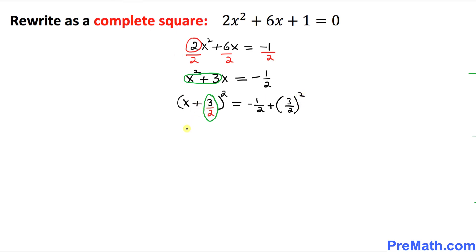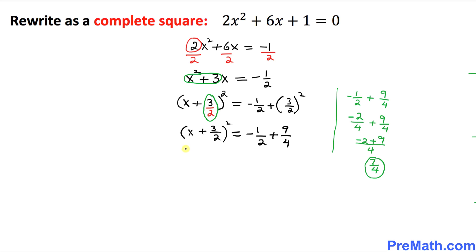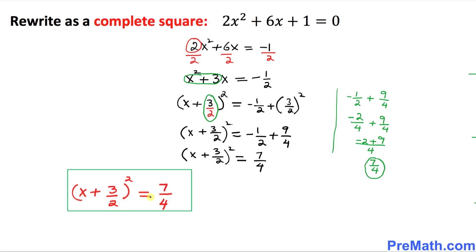Let's simplify. On the left hand side we simply got x plus 3 over 2 squared, equals negative 1 over 2 plus 9 over 4. Simplifying these two fractions — pretty simple process — this turns out to be 7 over 4. So thus our answer turns out to be x plus 3 over 2 squared equal to 7 over 4.